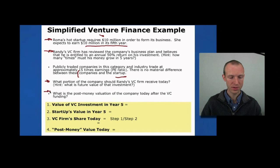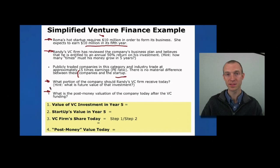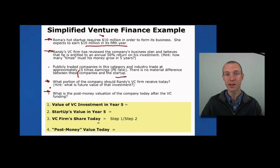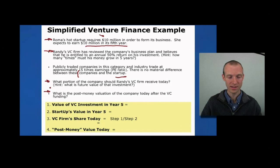The second question is: what's the post-money valuation of the company today after it receives the funding? You might think this is a little backwards — that Randy the VC should be thinking through what the current valuation of the company is and then how much money the company needs to raise, and therefore as an outcome of these two numbers it will determine the percentage ownership. But this is just to point out that sometimes the calculation is actually a bit different — we're working backwards from a percentage equity ownership to a current valuation that would give that percentage equity ownership.